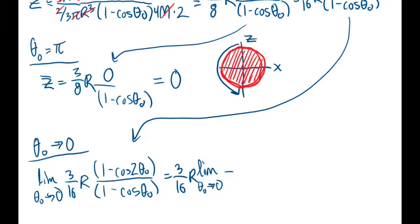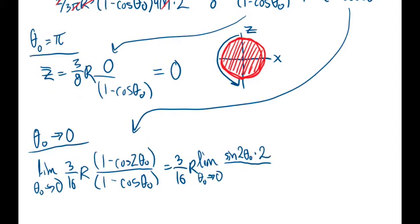Limit as theta naught approaches 0, and this is the derivative with respect to theta naught. The numerator will be the derivative of negative cosine, which is sine 2 theta naught times 2. In the denominator, it'll be sine theta naught. Those are both 0 at 0, so we'll take the second derivative.